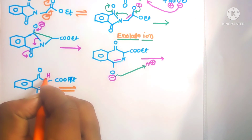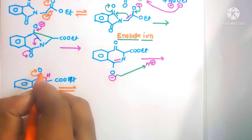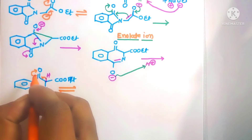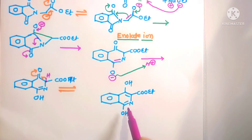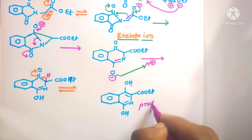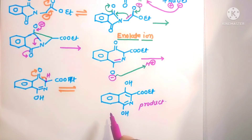This molecule is then acidified to form the next molecule. Keto-enol tautomerism takes place: the bonding electrons shift to form the keto from the enol group, resulting in the formation of the final product of this reaction.